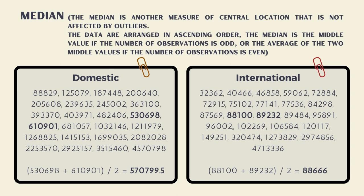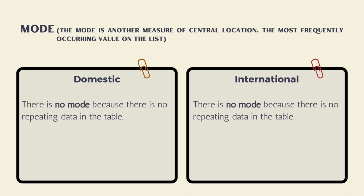For international, the two middle values are 88,100 and 89,232, divided by 2, so the median is 88,666. The mode is another measure of central location — the most frequently occurring value in the list. For both domestic and international, there is no mode because there is no repeating data in the table.